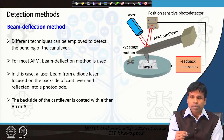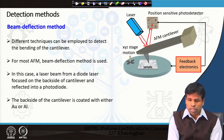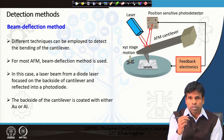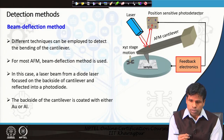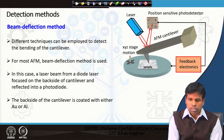As the cantilever goes up and down, the beam position will go up and down on the position-sensitive detector. With that, we can measure how much the cantilever is bending upward or downward, and thereby know the height or topography of the sample across the surface.